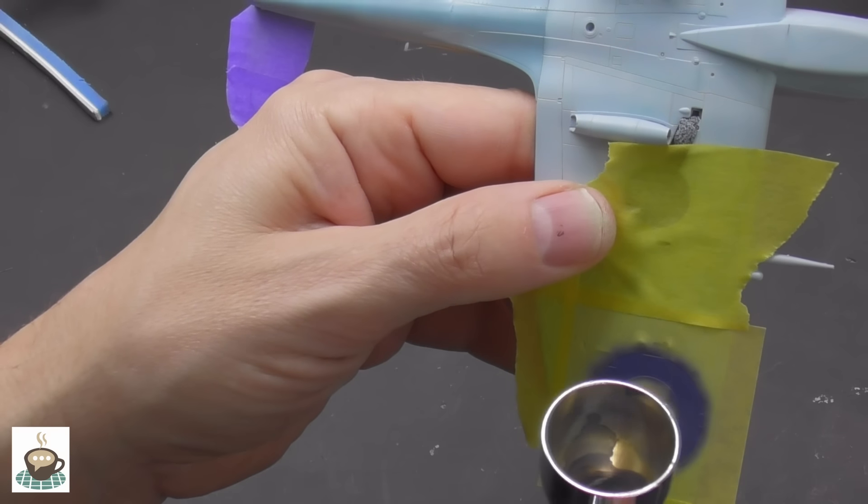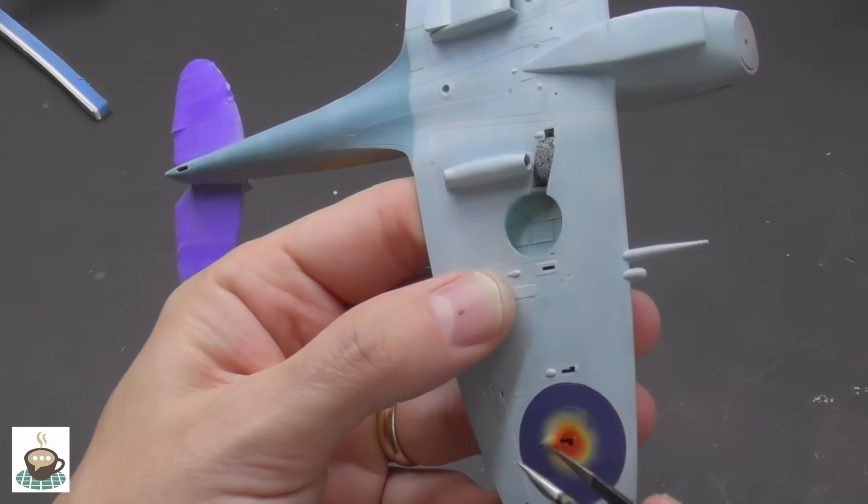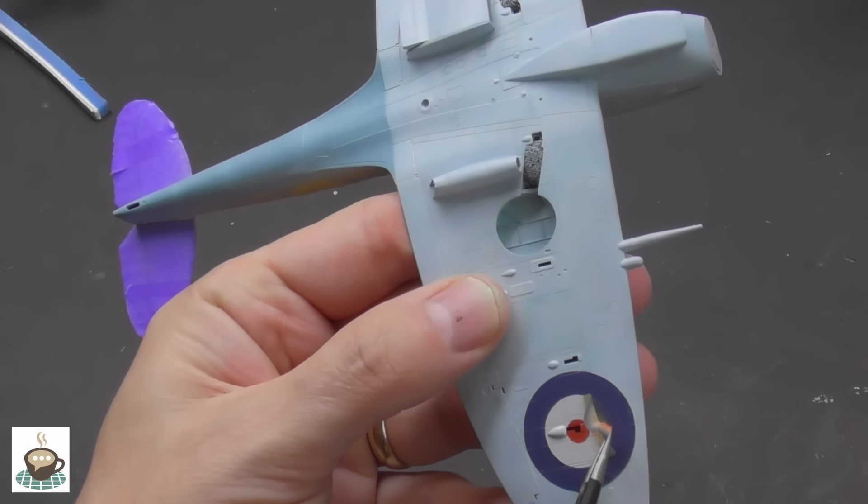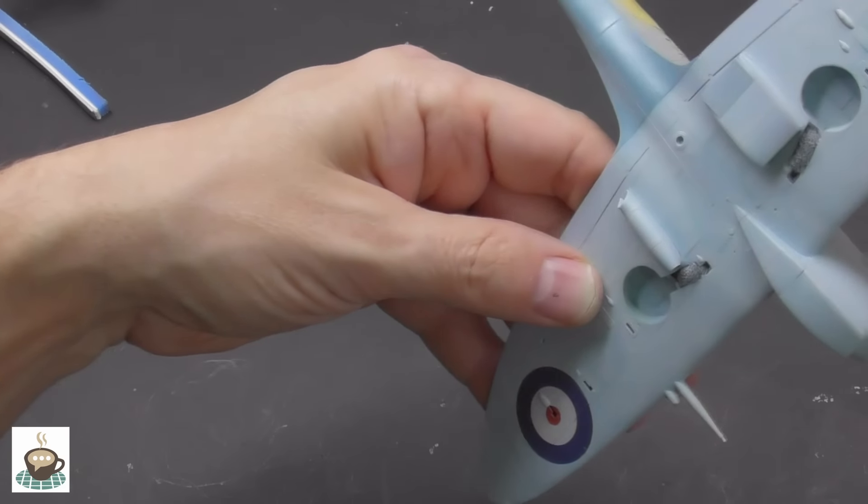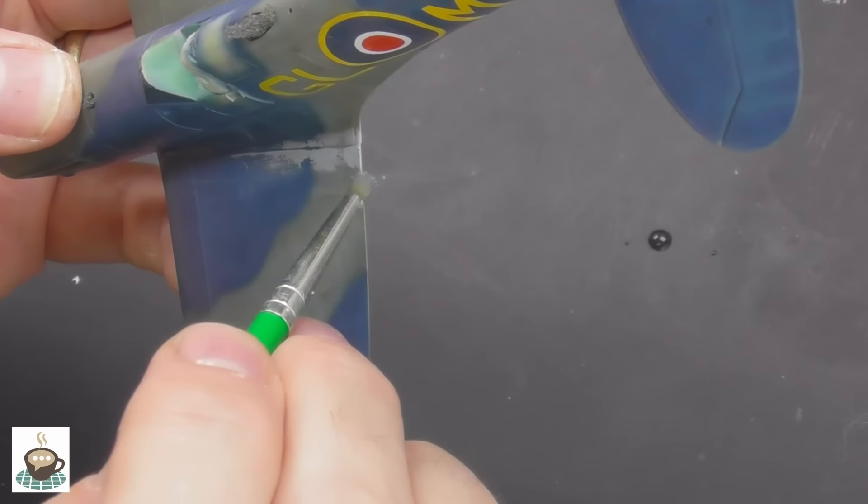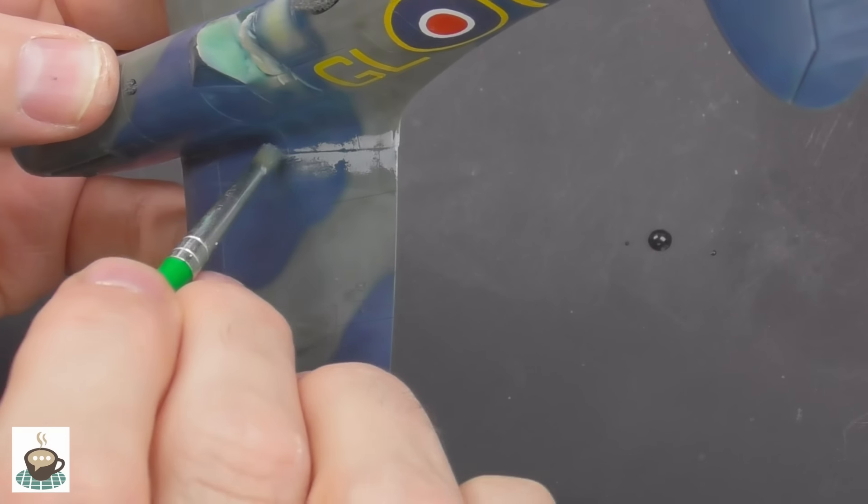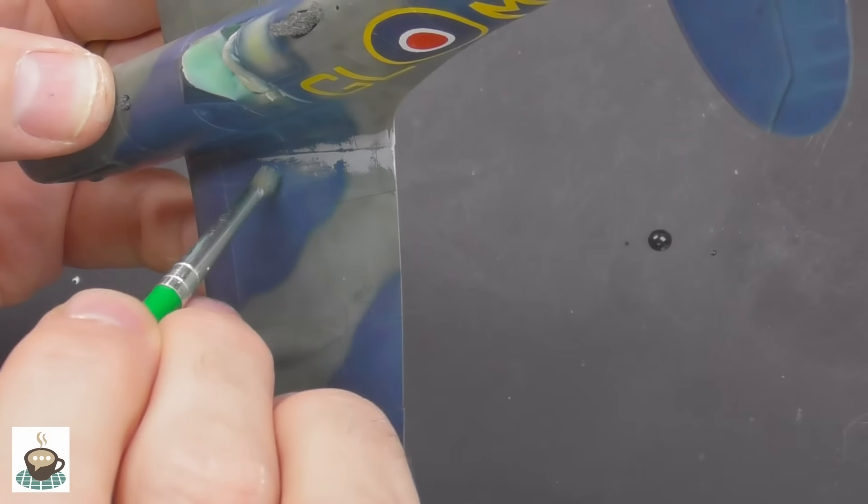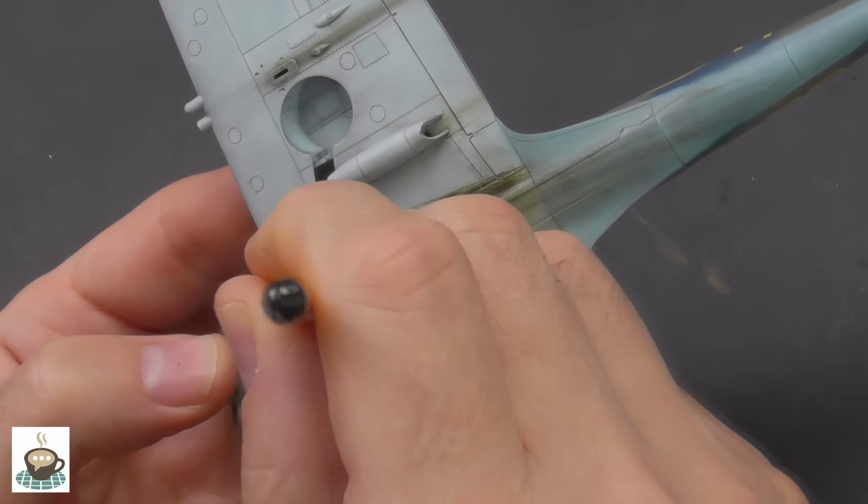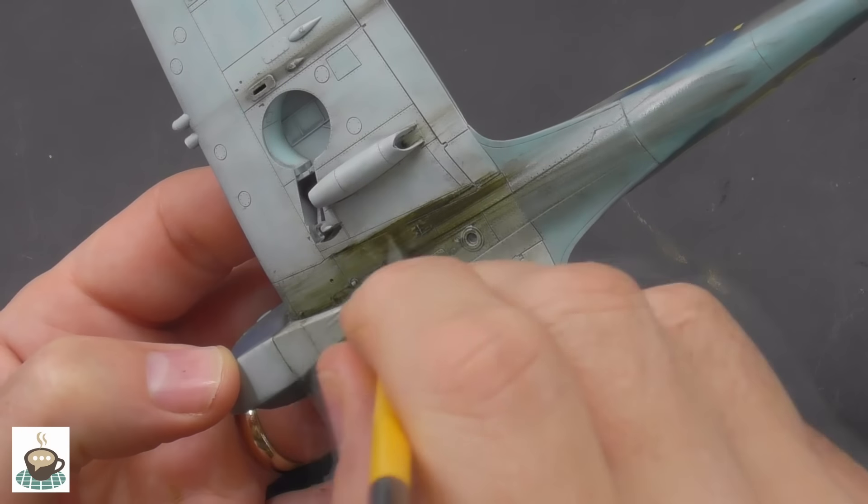As I mentioned, in the next episode it's going to be all about the painting and weathering. All the markings were sprayed on, so custom masks. Gives a really nice result, really shows off that surface detail. Do a bit of hairspray chipping, which yes does work with MRP. And we get really filthy with oils underneath.